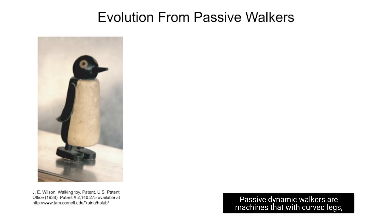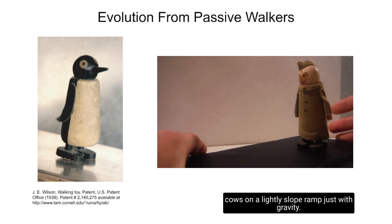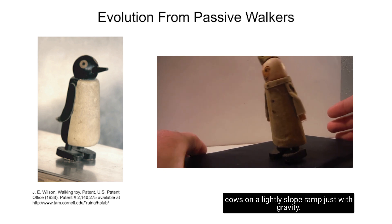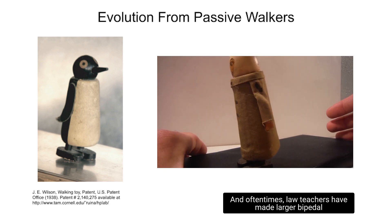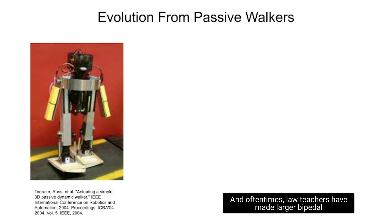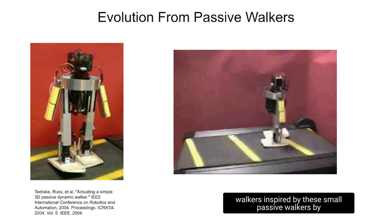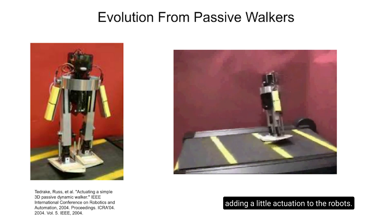Passive dynamic walkers are machines that with curved legs could walk down a lightly sloped ramp just with gravity and are oftentimes small. Researchers have made larger bipedal walkers inspired by these small passive walkers by adding a little actuation to the robots.